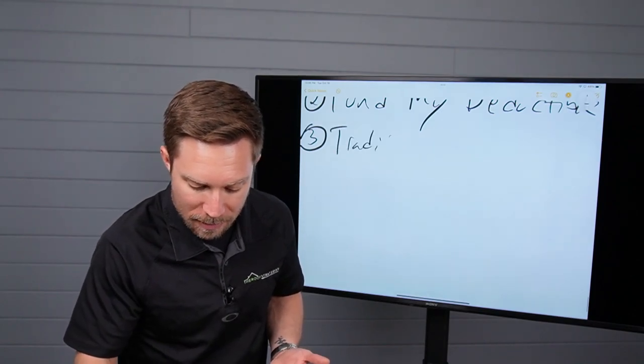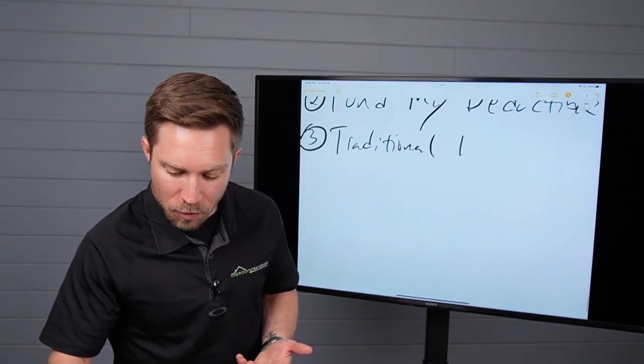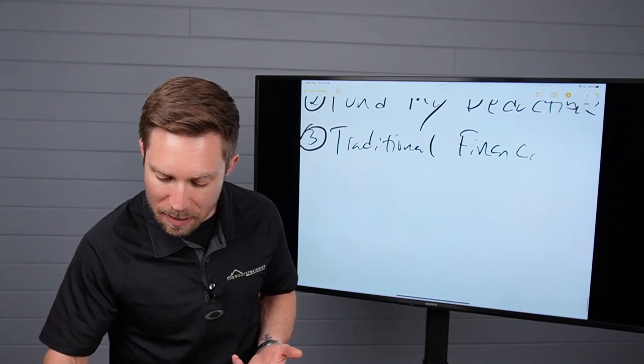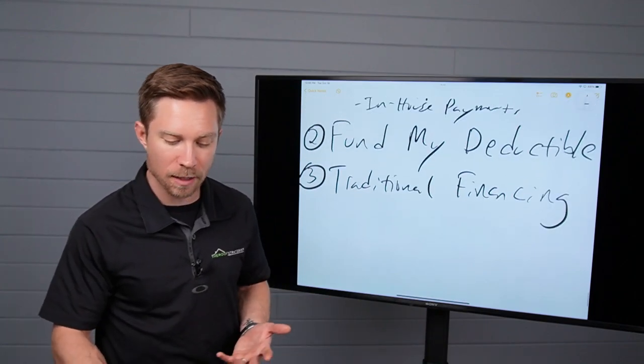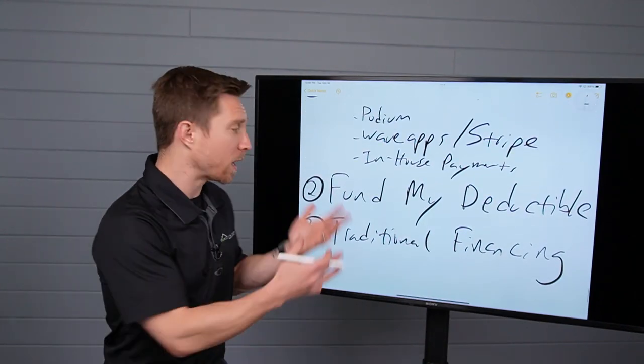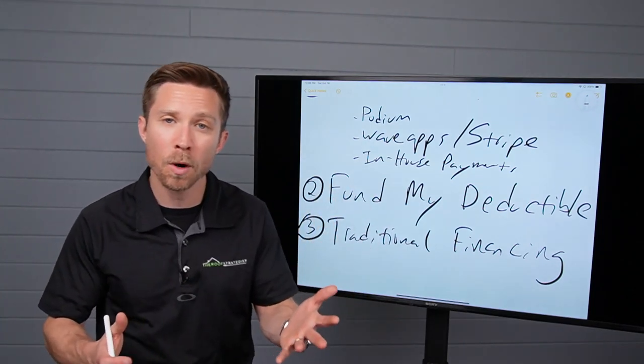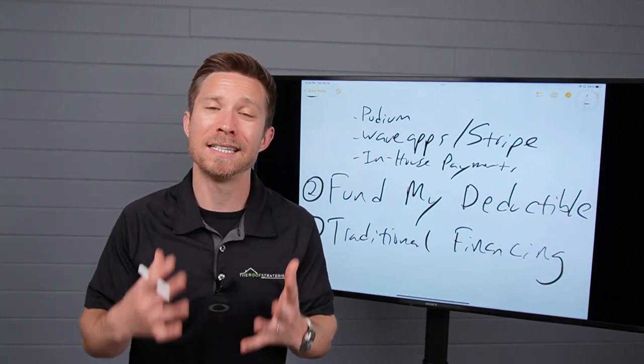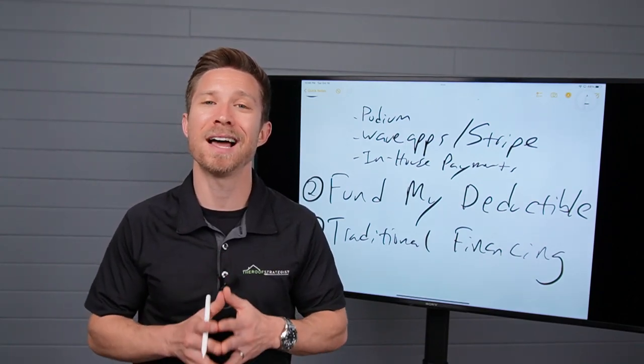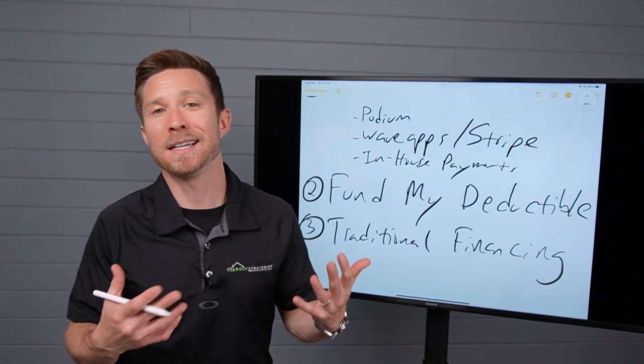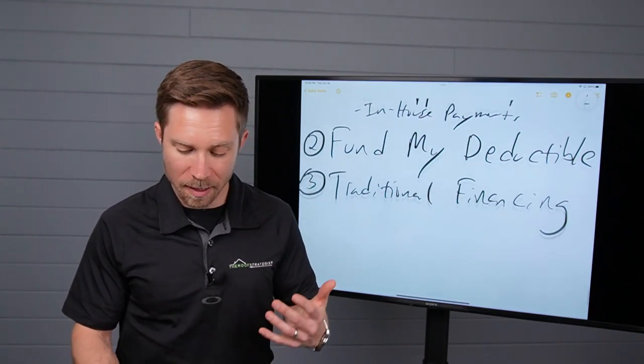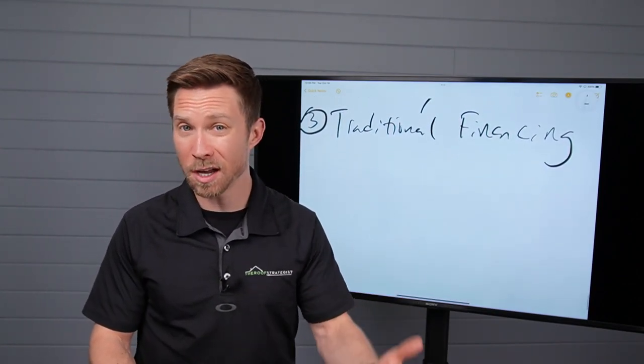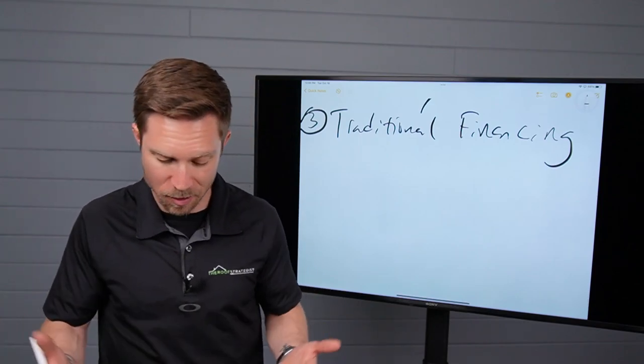Then we're going to start having some fun on option three, which is traditional financing. So many people don't think to use traditional financing. And in fact, many storm restoration contractors, they don't even offer financing because they're like, well, we do mostly storm work or cash jobs, but we don't have financing. I would challenge you, look at getting financing options set up because again, some homeowners may want to qualify and finance a larger deductible. And if you can't help them, you're not going to earn the business.